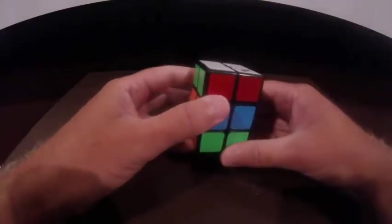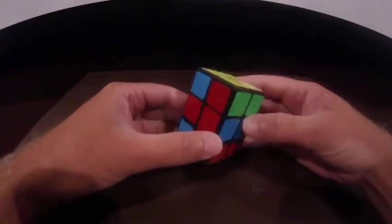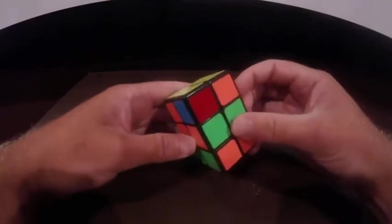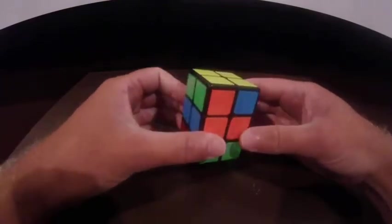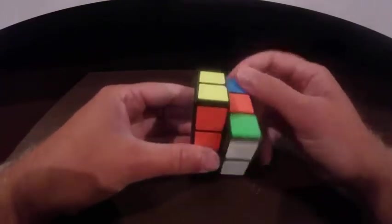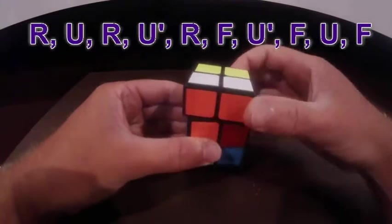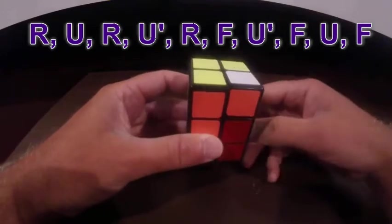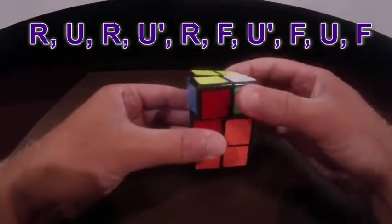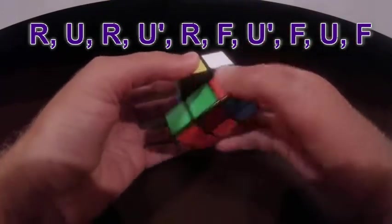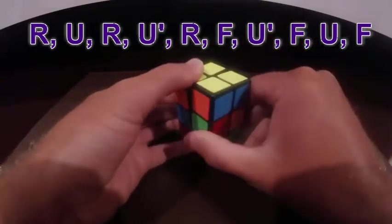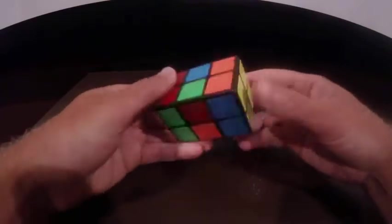Okay, now we want to do the same thing with the yellow side. So I'm just going to flip it over. We'll take a look. I already see the greens are solved. Okay, so we're going to do the same thing. Right, up, right, up prime, right. Then front, up prime, front, up, front. So now we have those solved.